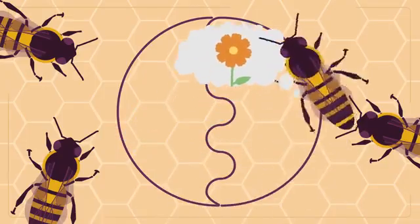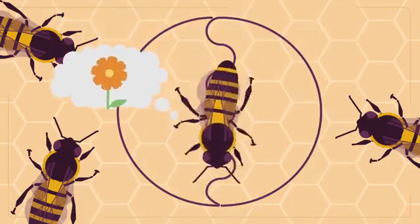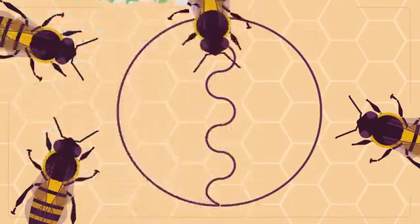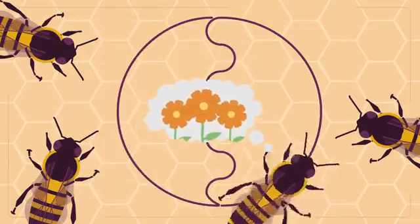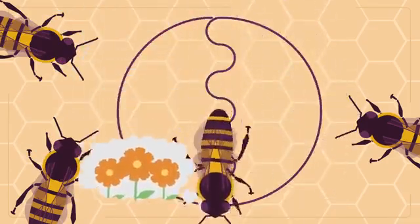Bees don't report distance using the metric or even the imperial system. Instead, they convey distance in terms of the amount of effort required to get to the food source. Therefore, a trip with strong headwinds would be communicated as farther than a trip with no wind, even if the physical distance is the same. If the resource is particularly rich in pollen and nectar, a bee will waggle more vigorously during the dance than they would while communicating a poor food source.